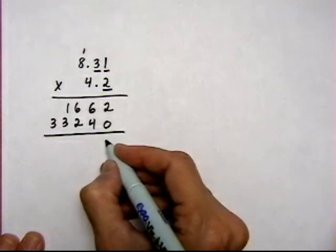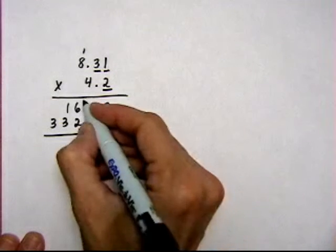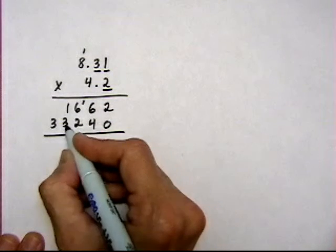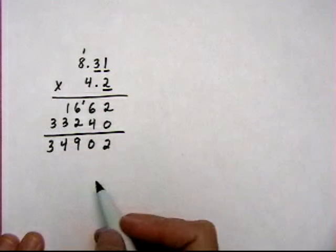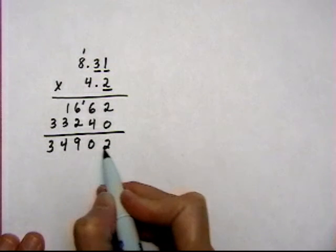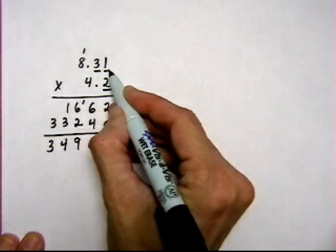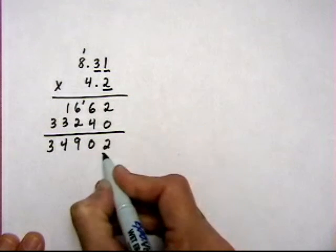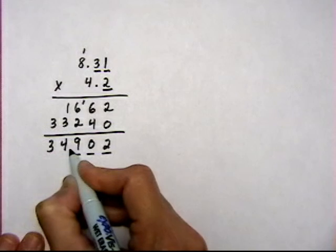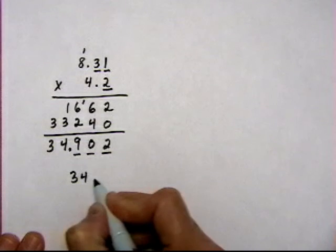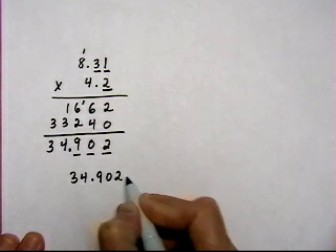I add these up and I get 2, 10. 6 plus 2 is 8, plus 1 is 9. 3 and 1 is 4, and 3. So I have 3, 4, 9, 0, 2. And I have to make sure the answer has 1, 2, 3 decimal places. So I put the point right there after the 4. So my answer here is 34.902.